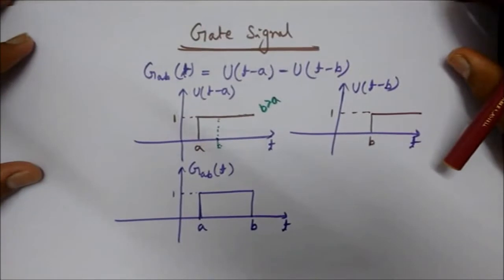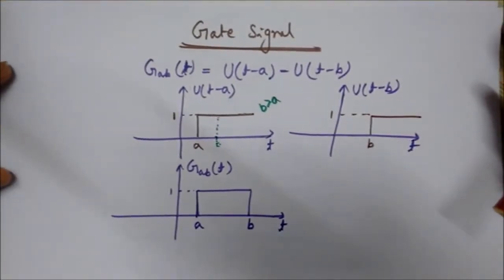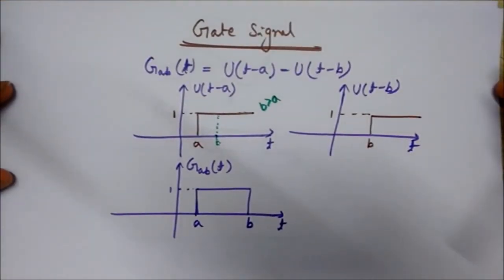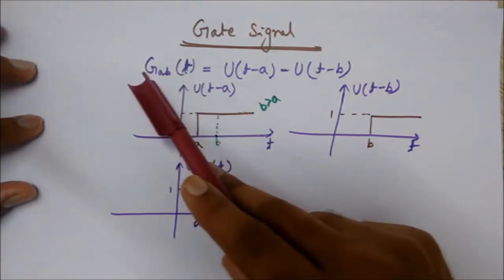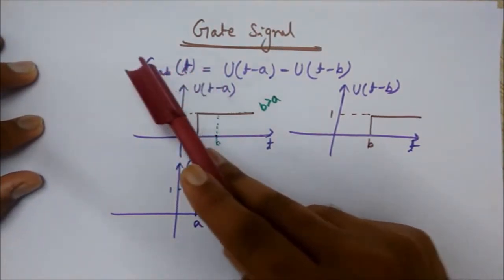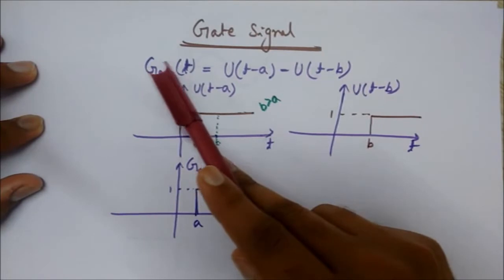Now let's see another type of signal which is a very important signal - it is called the gate signal. So this gate signal is defined as G_ab, where you can see a and b.